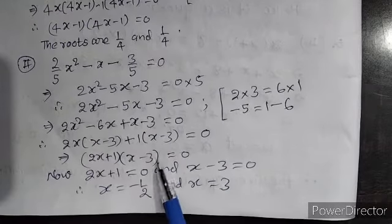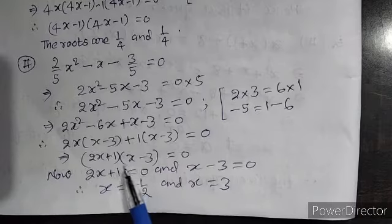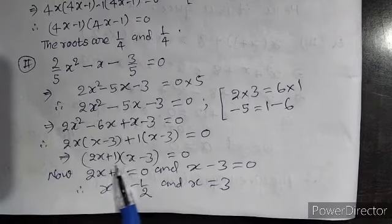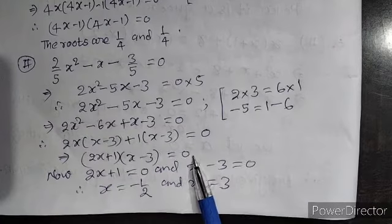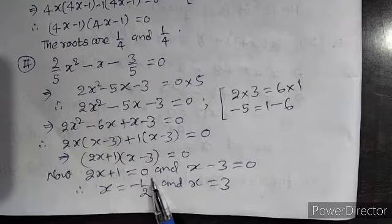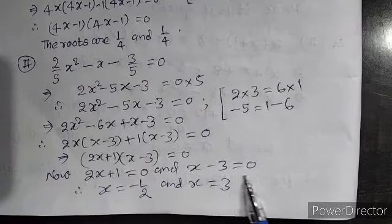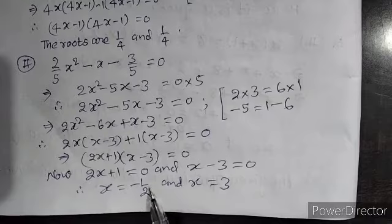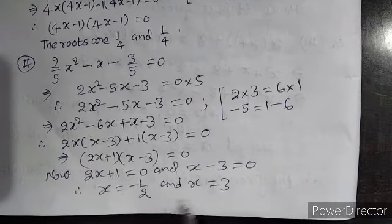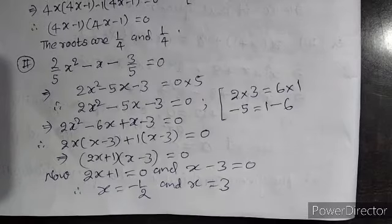Here, x minus 3 is the aggregate common. So, in one bracket x minus 3, another bracket remaining term 2x plus 1 equal to 0. This implies that either 2x plus 1 equal to 0 and or x minus 3 equal to 0. So, x equal to minus 1 by 2 and x equal to 3. These are two roots of the given quadratic equation.